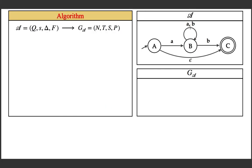Here is an NFA with epsilon transitions and we try to generate the grammar. Given this NFA with epsilon transitions and a unique start state, we write an algorithm to generate the right linear grammar. Step 1: identify all the states — the states are going to be the variables of the grammar. The set of non-terminals is exactly the set of states in the NFA.